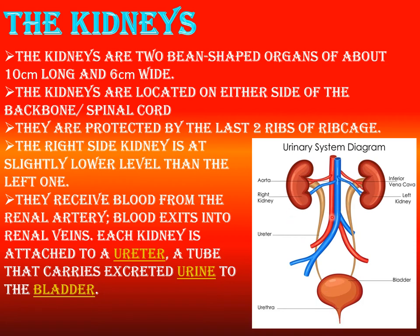One branch is the artery shown in red and the other is the vein. The red-colored branch of the aorta entering each kidney is the renal artery. The blue-colored branch is the inferior vena cava, which removes blood from the kidneys and carries it back to the heart. Deoxygenated blood is carried from the kidneys to the heart and then to the lungs for oxygenation.